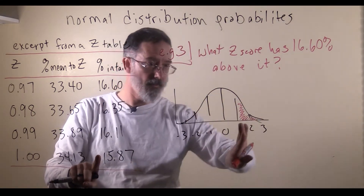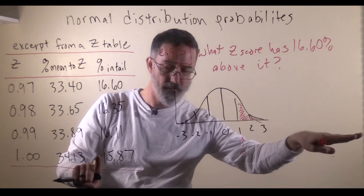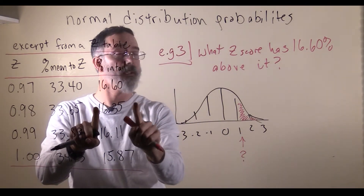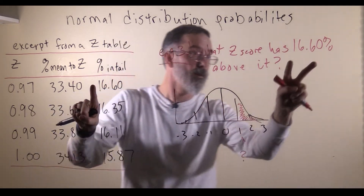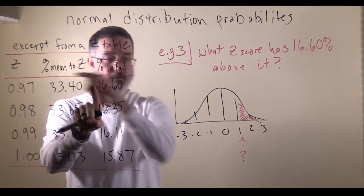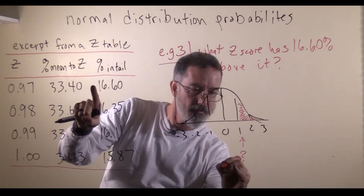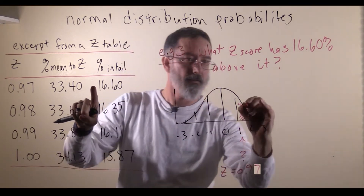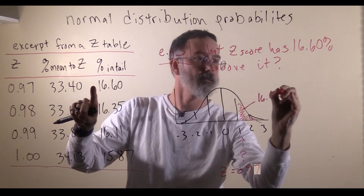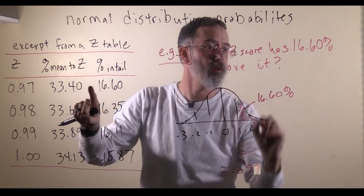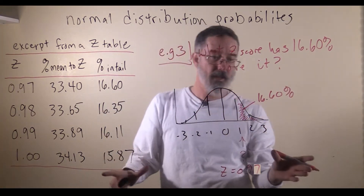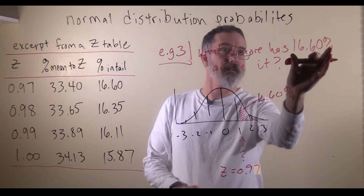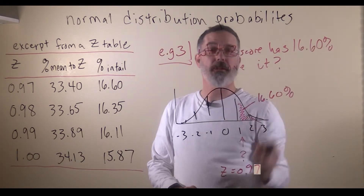So the percent in the tail — percent beyond — we scan down until we find it. A z-score of 0.97 has 16.60% above it. So that answers the question: a z-score of 0.97 has 16.60% above it.